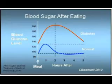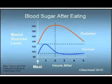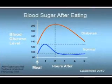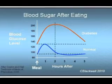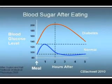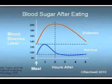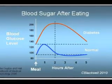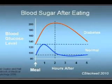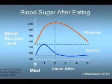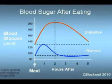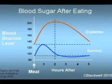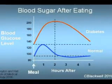Now look at blood sugar in a person with diabetes, the orange line. It shows no overlap with normal behavior. The fasting sugar starts higher, say 125 or over. After a meal, blood sugar rises to a much higher level and stays there, still near its maximum at two hours. So in diabetes, there is too much glucose in the bloodstream and not enough in the cells.